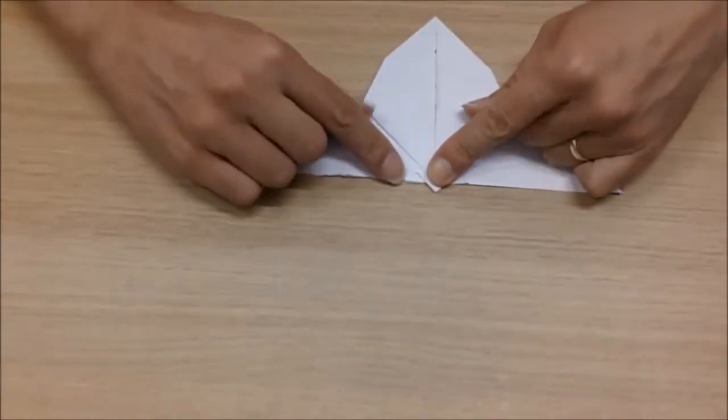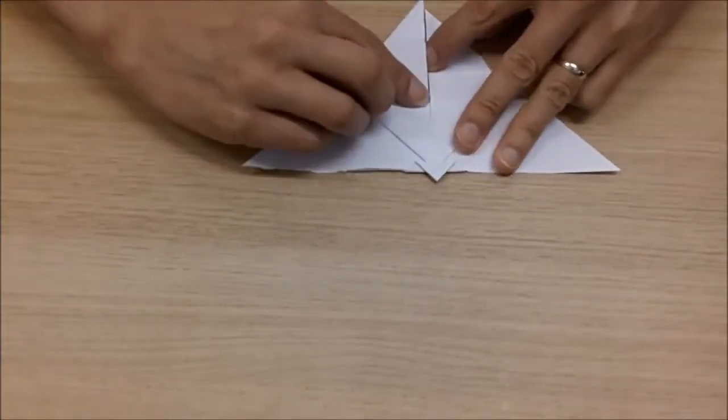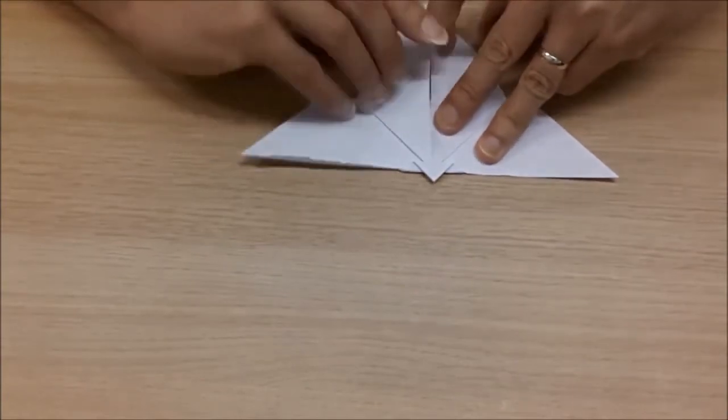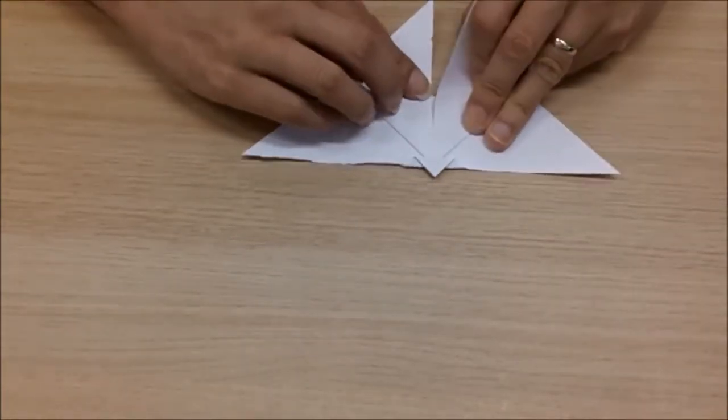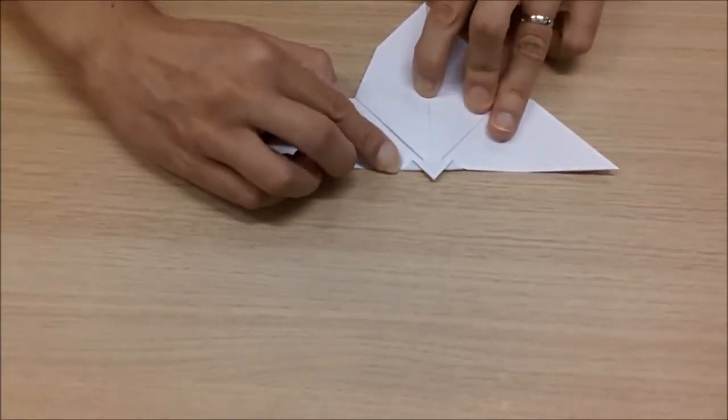Now what we need to do now is, if you imagine there is a line which goes from this point here, where you can see this horizontal sheet of paper underneath these two flaps, going up to where we've made this fold here.